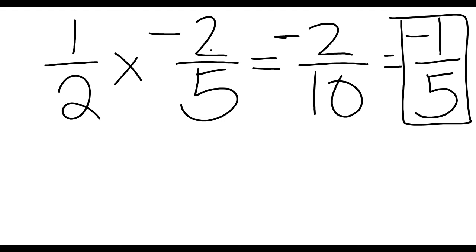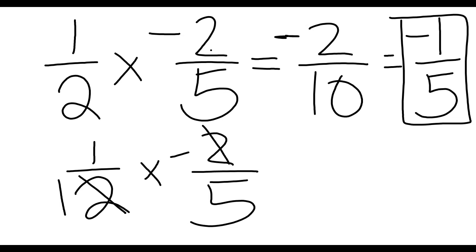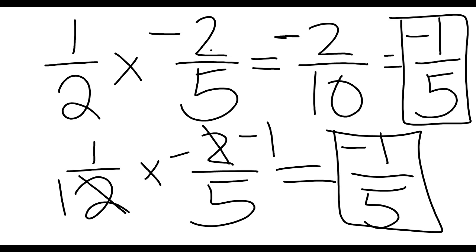Okay, or if you had done the pre-simplification way of doing it, you would see that 2 and negative 2 can both be divided by 2, making this 1 and making this negative 1. All right, so 1 times negative 1 is negative 1, and 1 times 5 is 5. Again, ending up with the same answer. It doesn't matter which way you do it.